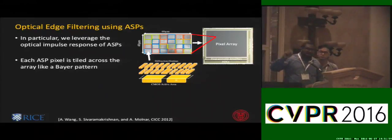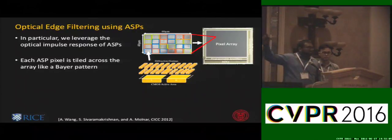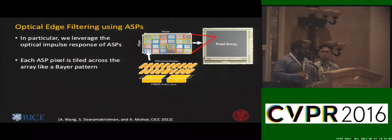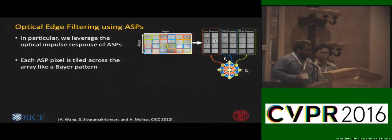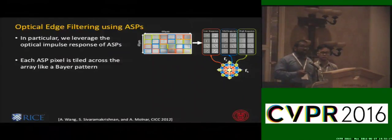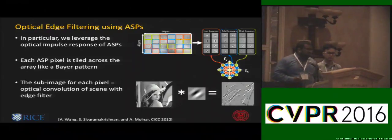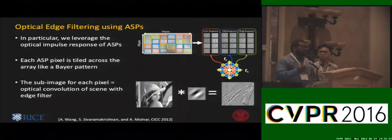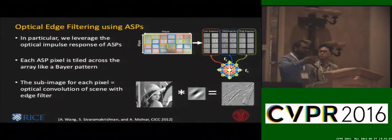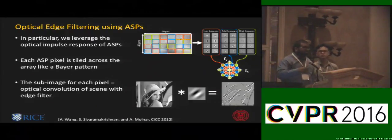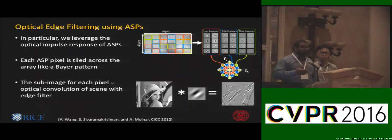If you take each pixel and tile it in a Bayer pattern, and that unit tile is then tiled across an entire image sensor, that is how we build our ASP image sensors. Each type of pixel corresponds to a bandpass edge filter in frequency space, depending on the orientation and frequency of the grating. Each sub-image or sub-color channel looks like an optical convolution of the scene with the edge filter, because the lens transforms angle into space in the optics. What we get out is 24 channels of different edge-filtered images.